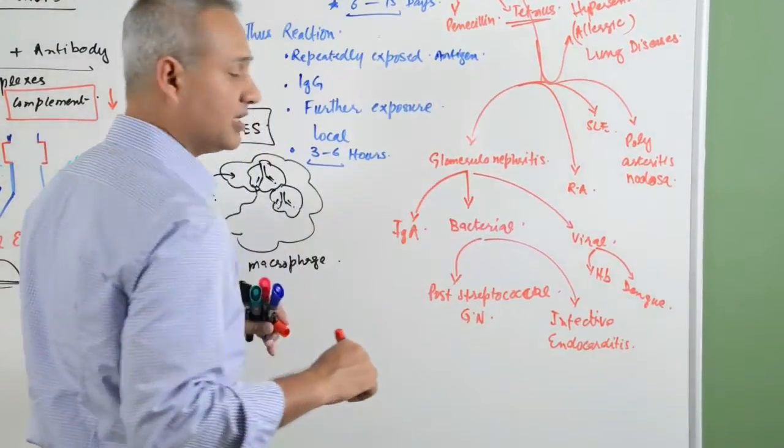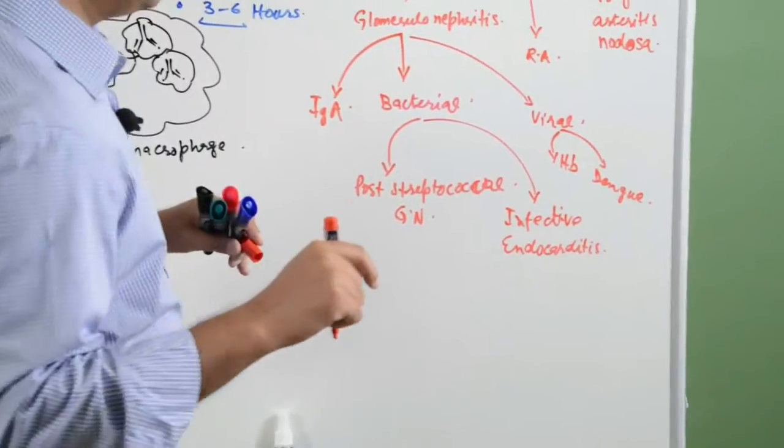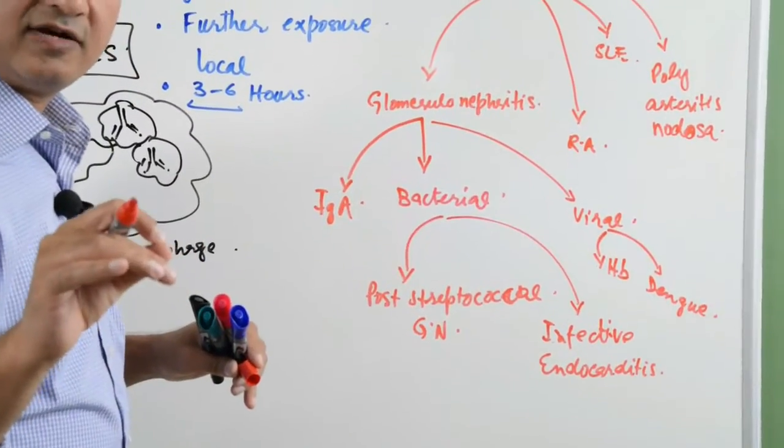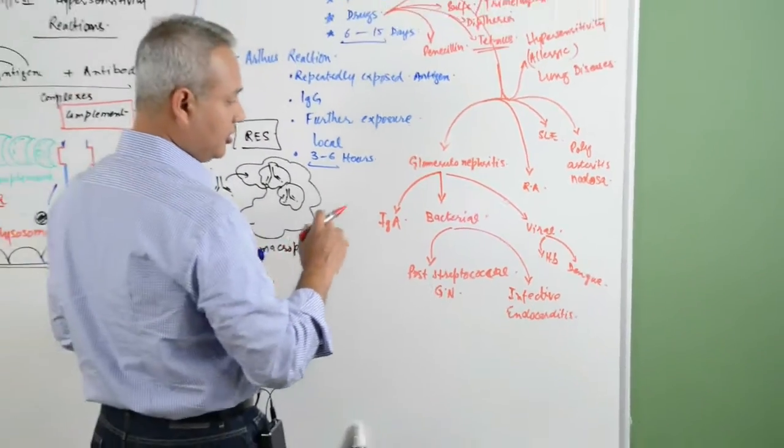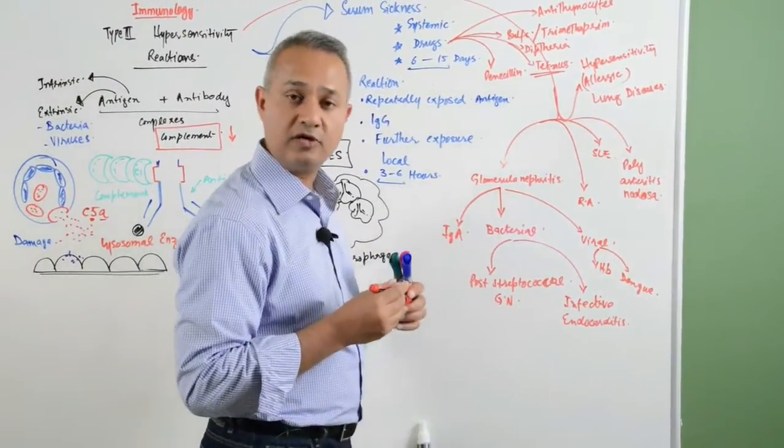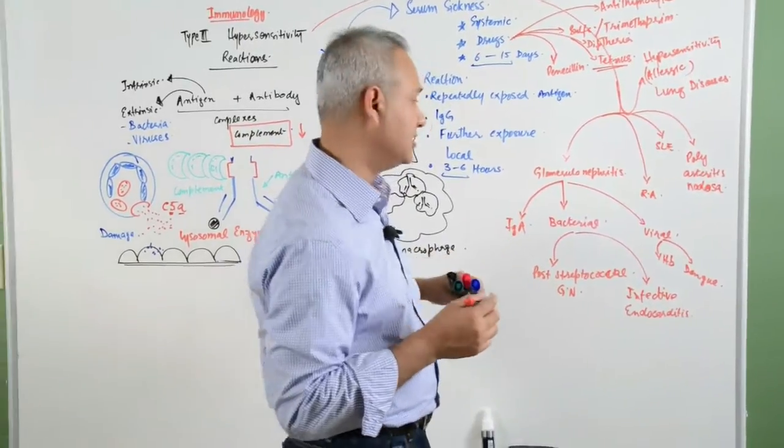These viruses can cause glomerulonephritis because of immune complexes that are formed and then settle onto the kidney. We have some reasons for glomerulonephritis due to type 3 hypersensitivity.